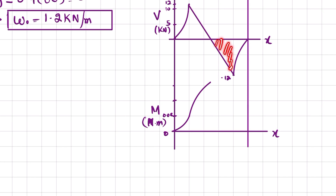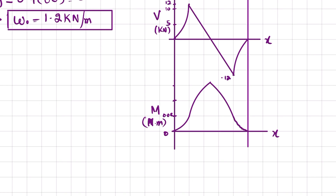The symmetric leaf load on the far side replicates the first region, bringing the moment back to 0.08. Then the final triangular area of −0.08 brings the moment back to zero, forming a third-degree curve. The key moment values are: 0.08 and 0.26 newton-meters.